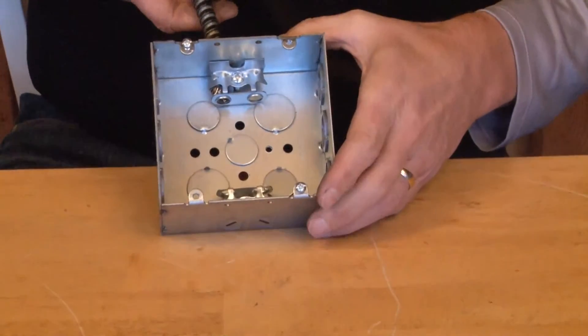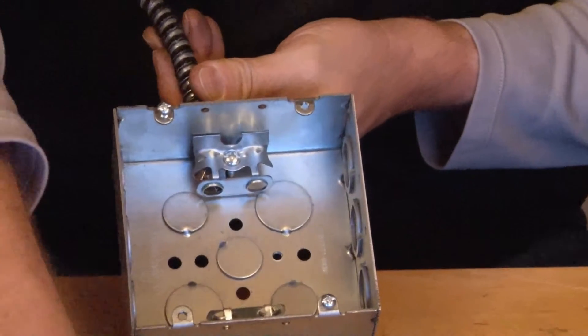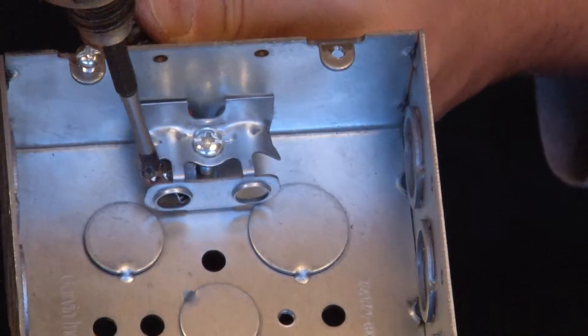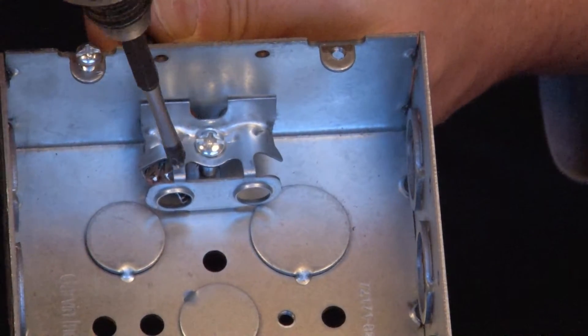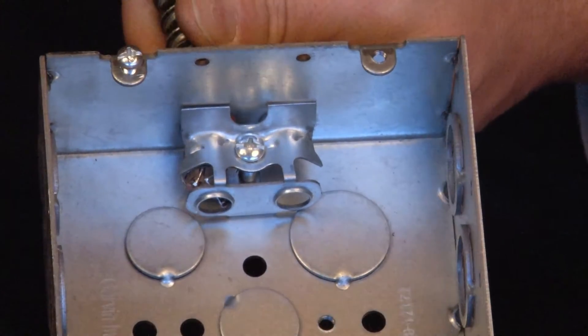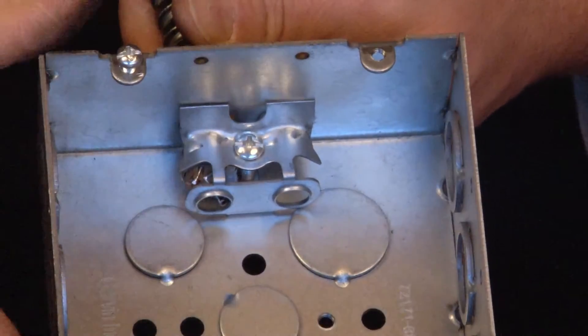At this point, you take your screw gun, tighten down the clamp screw, which secures the box clamp to the flexible metal conduit, and you're ready to wire everything up.